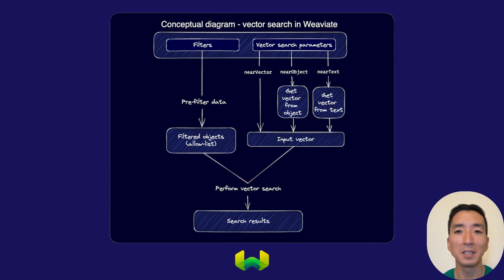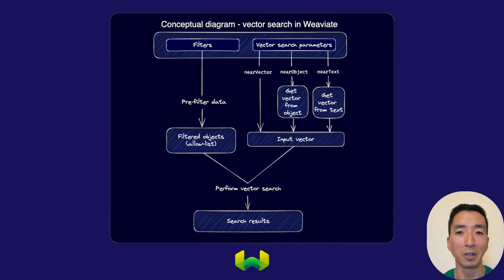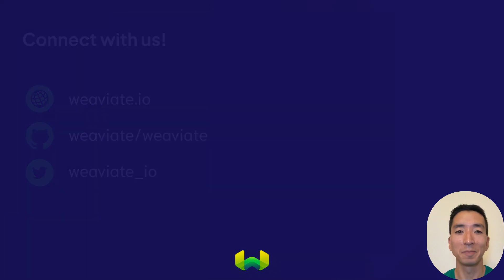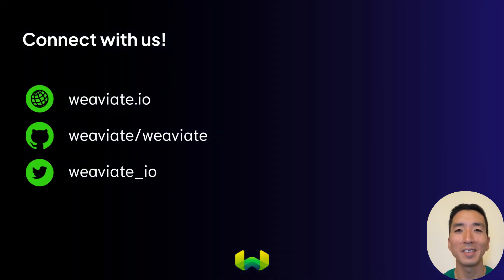Now this is something of a simplification, but hopefully this gives you a good mental model of how a vector search works in Weaviate — in terms of both how filtering works in conjunction with the vector search, and how those vector search parameters work. That's it for this video. Thanks for watching, and we'll see you soon.